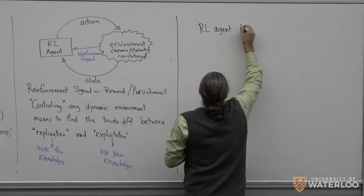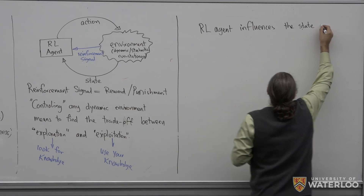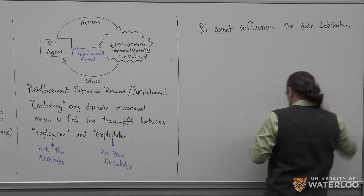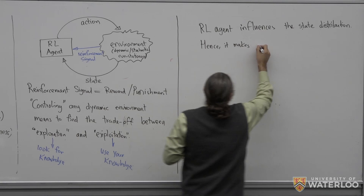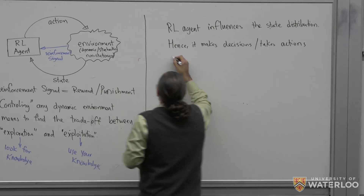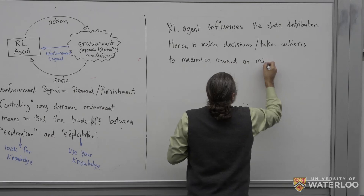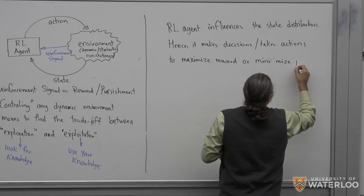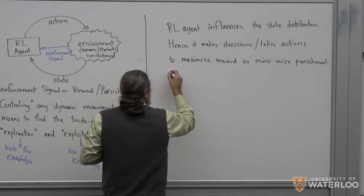The RL agent influences the state distribution and makes decisions or takes actions to maximize reward or minimize punishment.